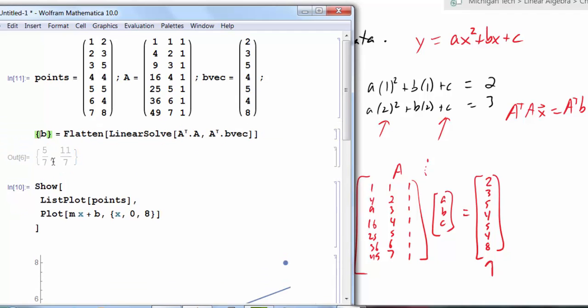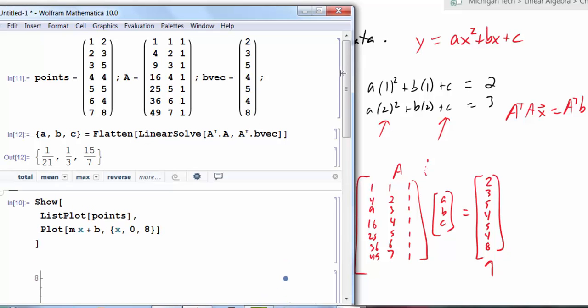Once again I'm no longer looking for m, b. But rather a, b, and c, which is the least squared solution for this one. And sure enough now I get my three values.